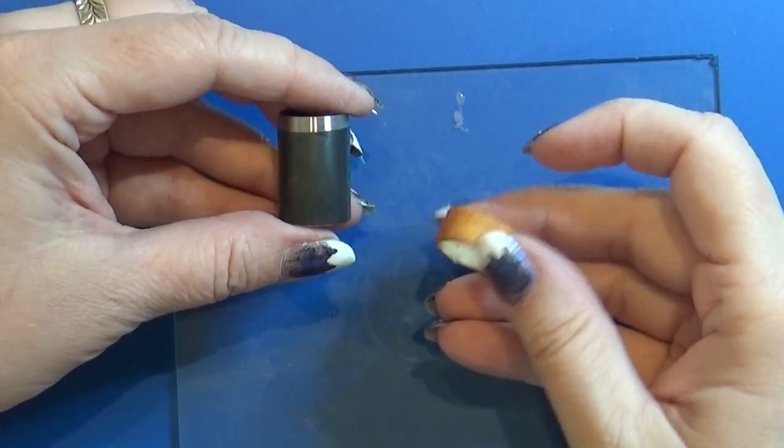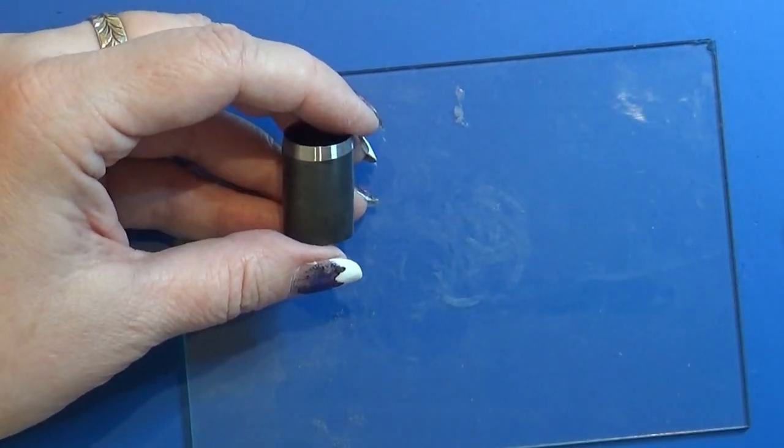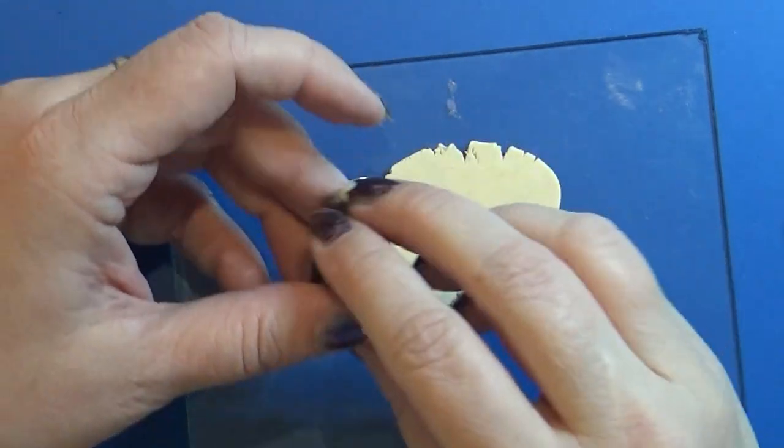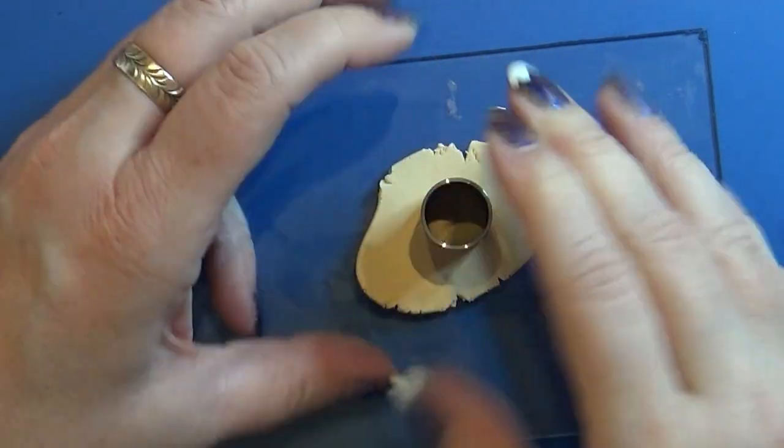I took off the rim while it was still hot and let it cool down. Now I'm using a piece of clay that had been rolled out a bit thicker than before.